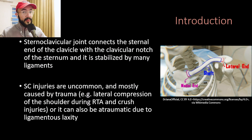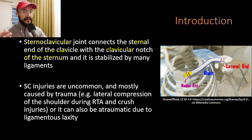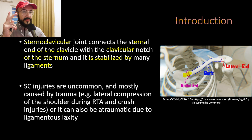In our talk about sternoclavicular joint injuries, we will start with an introduction. The sternoclavicular joint connects the sternal end of the clavicle, which you can see in this picture, with the clavicular notch of the sternum. Basically it connects the sternum with the clavicle, and it is stabilized by many ligaments including the anterior sternoclavicular ligament, the posterior capsular ligament, the sternoclavicular ligament, and the intra-articular disc ligament.